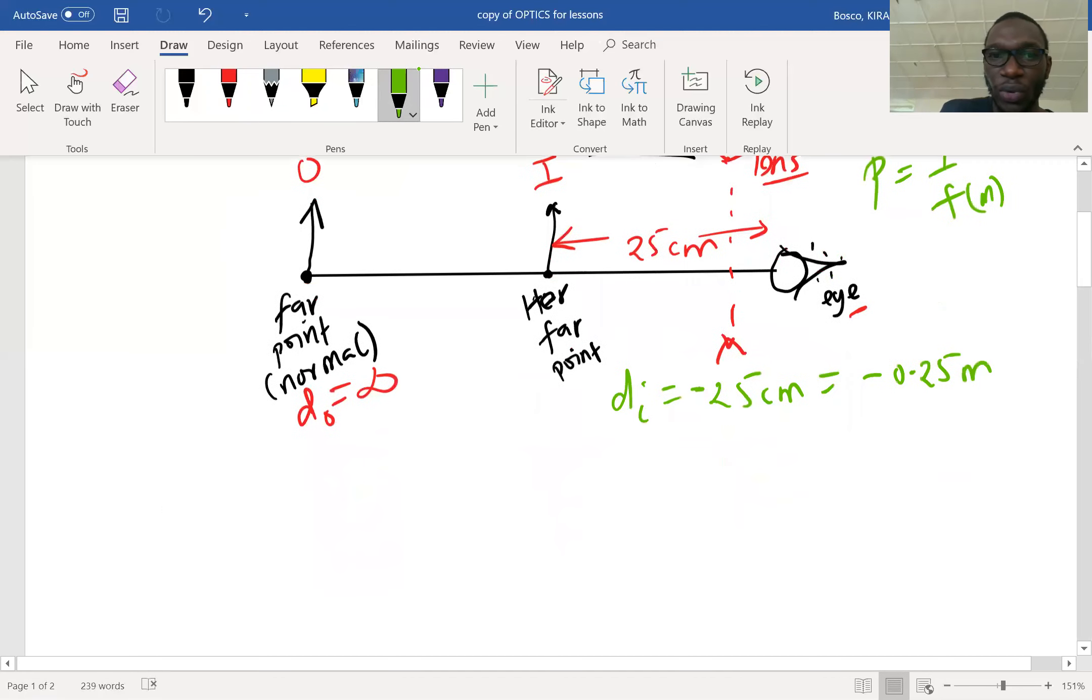And then we recall that the lens equation is 1 over f equals 1 over d_object plus 1 over d_image. This is going to be 1 over d_object, which is infinity, plus 1 over negative 0.25 meters.